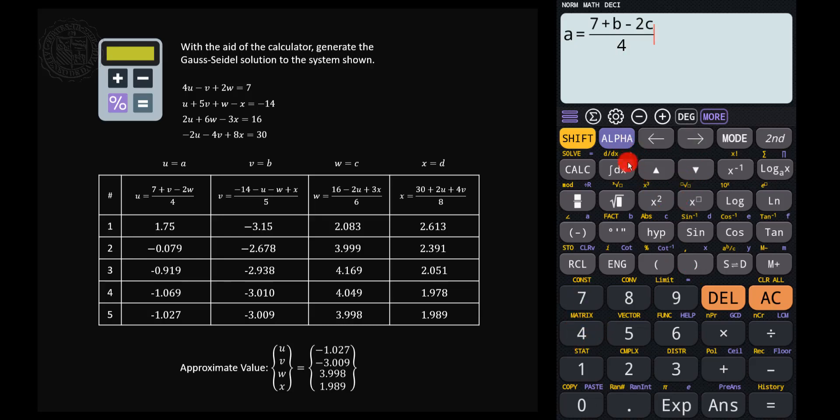And then, the trick here is that we'll make use of this colon function of the calculator. So if your calculator has no colon function, that means that this exercise is not applicable. But most scientific calculators has this function. So let's input the colon symbol and then let's type the next equation. So we have v but v is denoted by letter b, so we have alpha b, then equals negative 14 minus u but u is equal to a, then minus w, w is equal to c, and then plus x, x is equal to d, all over 5.